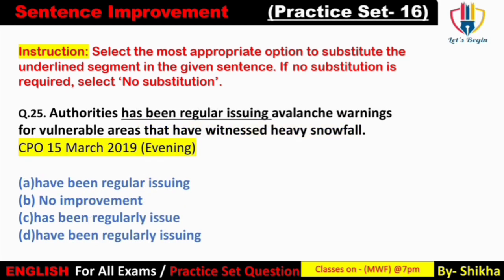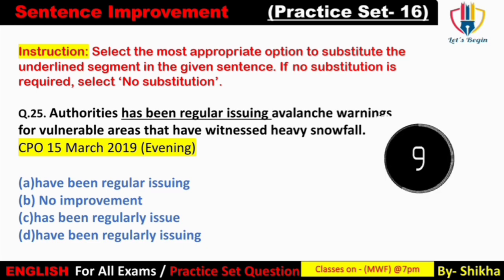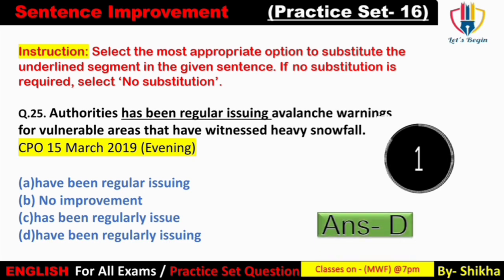Next: 'Authorities has been regular issuing avalanche warning for vulnerable areas that have witnessed heavy snowfall.' 'Authorities' plural noun hota hai, iske liye plural verb chahiye — 'have,' not 'has.' Option A 'how been regular issuing' — galat. Option D 'have been regularly issuing' — 'issuing' verb hai, iske pahle adjective nahi adverb ki zaroorat hai, toh 'regularly' sahi hai. Answer: option D — 'have been regularly issuing.'